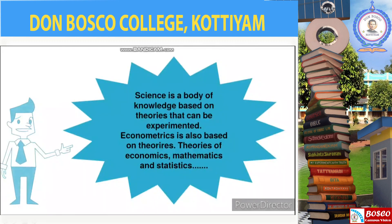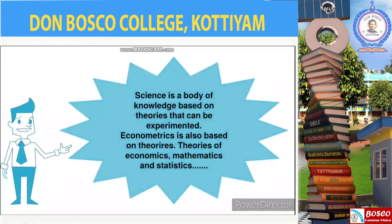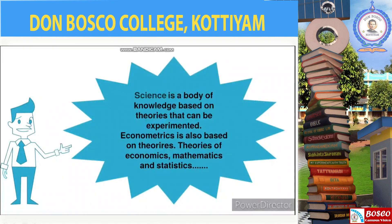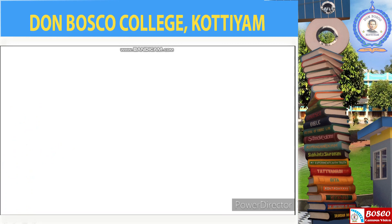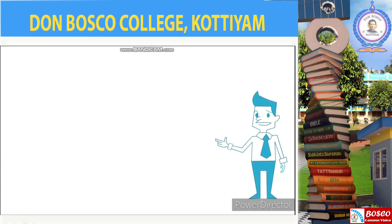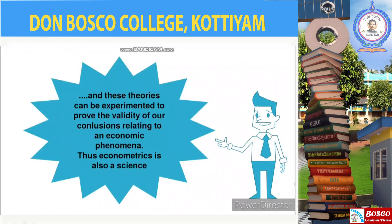Now, how does it become a science? Science is a body of knowledge based on theories that can be experimented. Similarly, econometrics is also based on theories — the theories of economics, mathematics, and statistics. These theories can be experimented to prove the validity of our conclusions relating to an economic phenomenon.